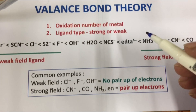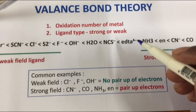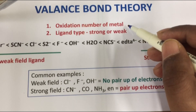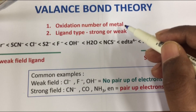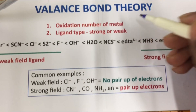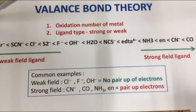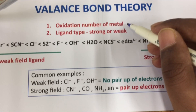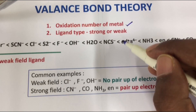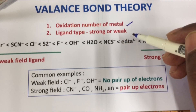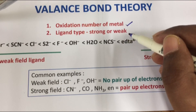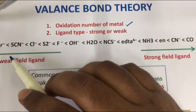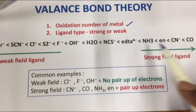We have to analyze the coordination complex. We have to calculate the oxidation number of the metal. The second step is to identify the ligand as strong or weak, and then identify the metal as strong or weak using the Spectrochemical series.